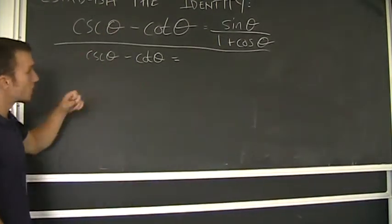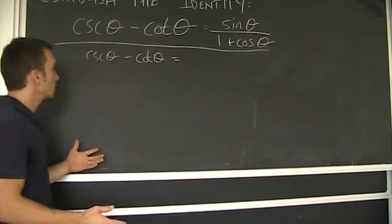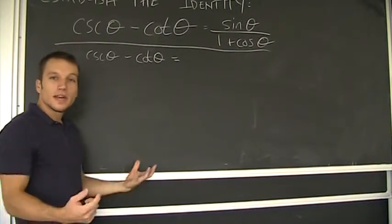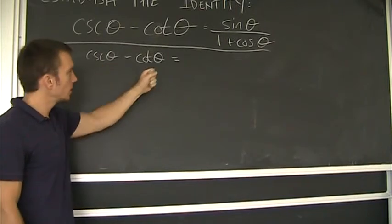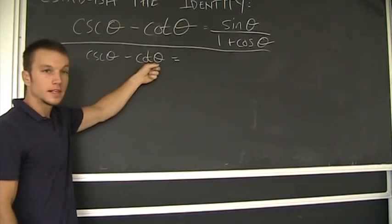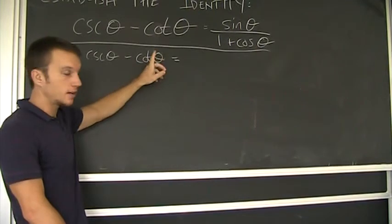Alright, so again, what's the first step in this example? The only thing I can think of to do would be to apply the reciprocal identity here and the quotient identity here. And I'll show you why.